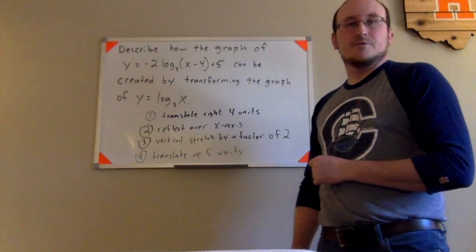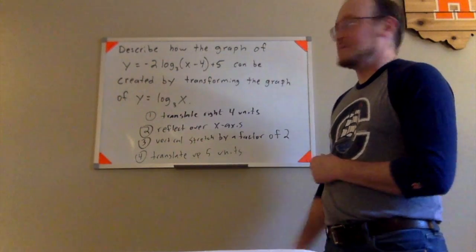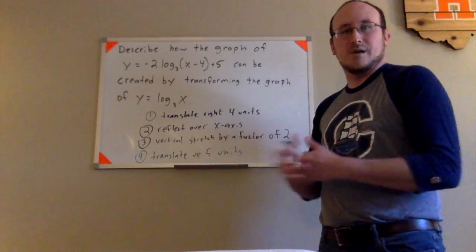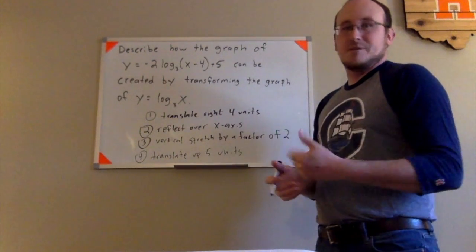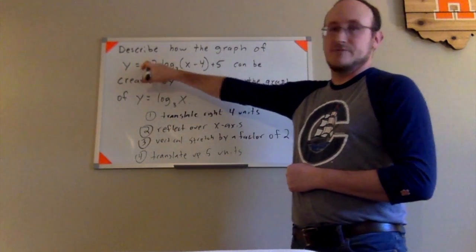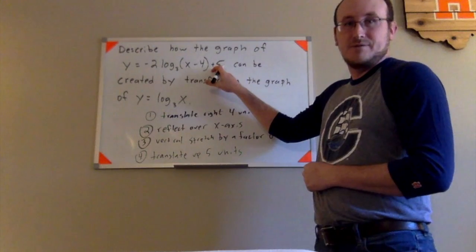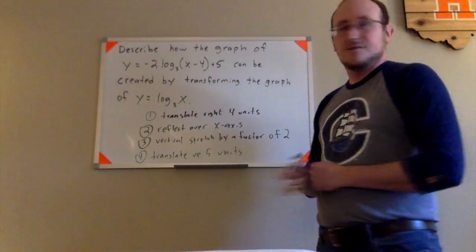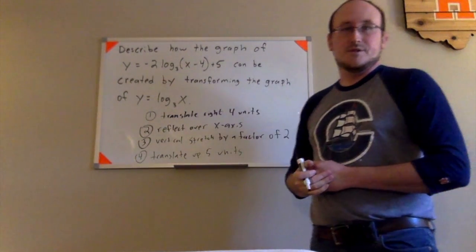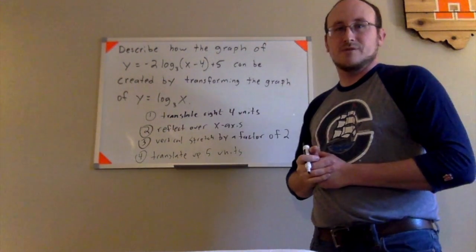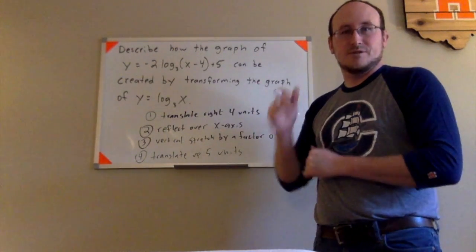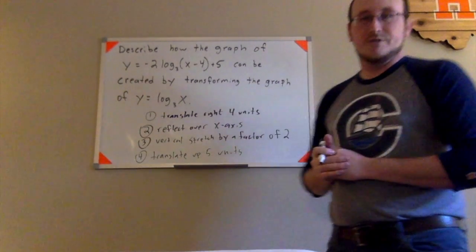My advice would be to save that vertical translation for the end. Sometimes people start to talk about that vertical translation before they start telling me to stretch vertically or reflect. You need to be careful with that. If you were doing that, you would kind of be implying that this negative 2 is also being multiplied by this 5, which it is in fact not. So you want to make sure that you deal with everything that would be affected by that before you deal with this. Just a good rule of thumb to keep your transformations in an order that will actually produce the graph of the function if somebody was actually trying to follow them step by step as you had listed them.